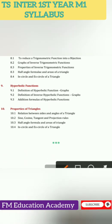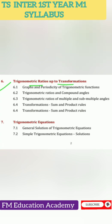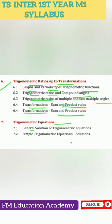Chapter 6 covers trigonometric ratios up to transformations: graphs and periodicity of trigonometric functions, trigonometric ratios of compound angles, multiple and submultiple angles, transformation, sum and product rules. Chapter 7 covers trigonometric equations: general solution of trigonometric equations and simple trigonometric equations and their solutions.